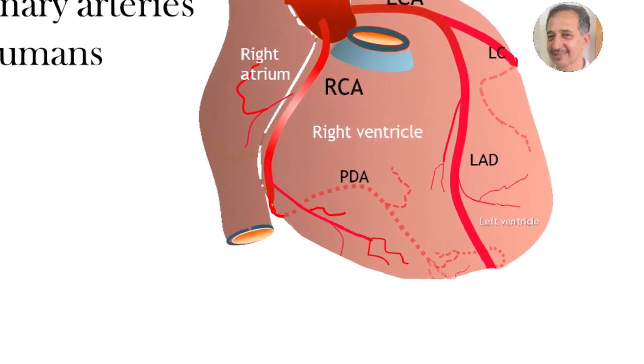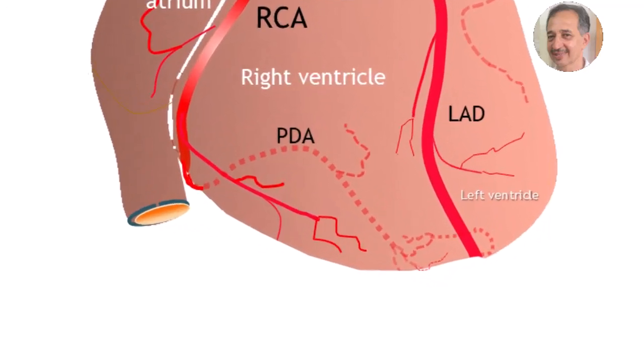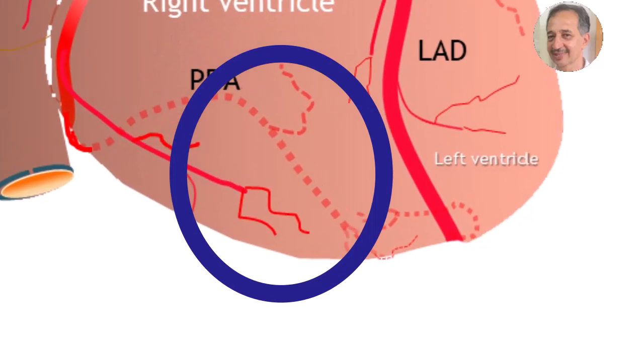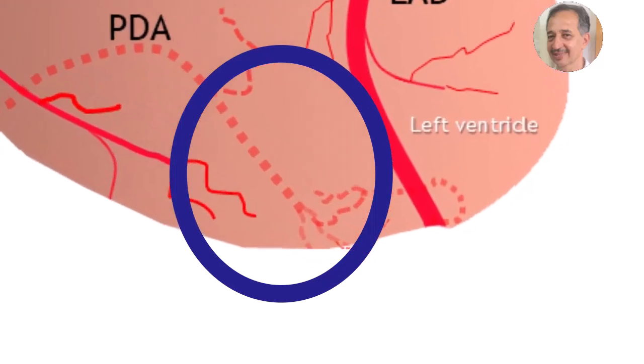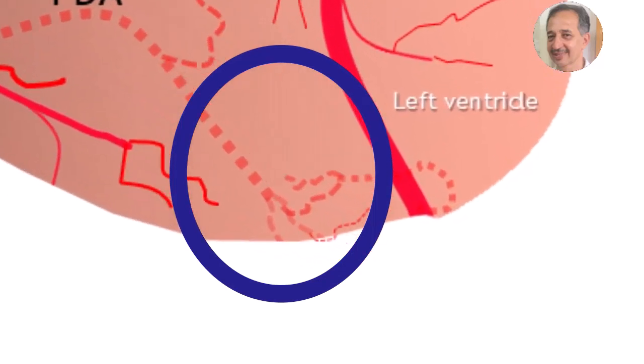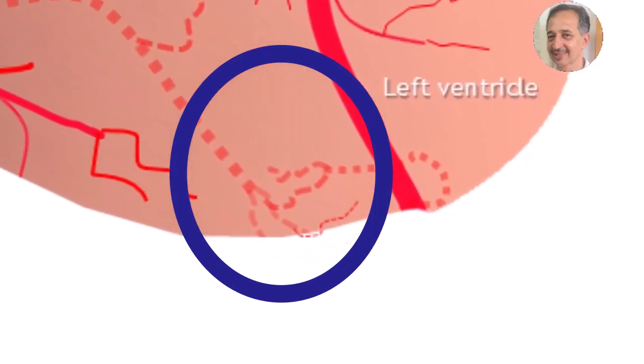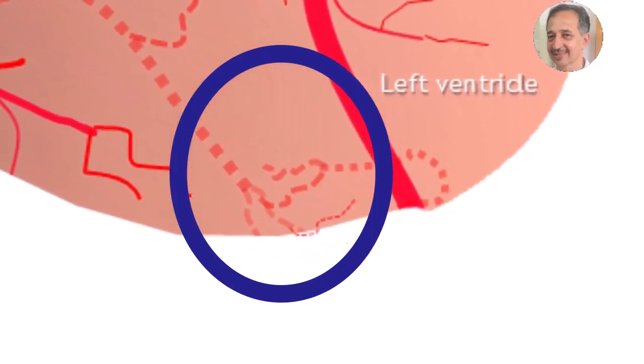Coronary arteries are functional end-arteries, with minute collaterals being non-functional. However, when coronary obstruction occurs, collateral channels enlarge and provide direct anastomosis between the adjacent arteries.